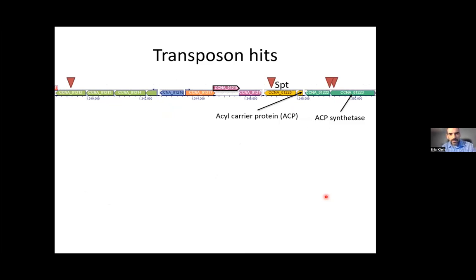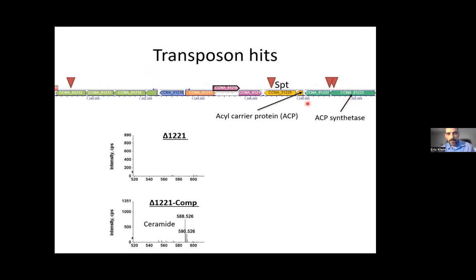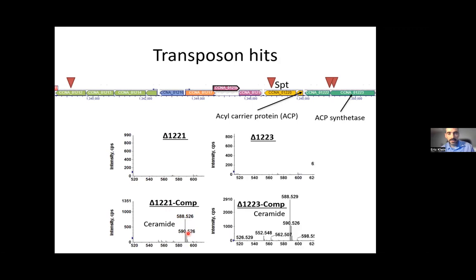When we did the screen we got a number of transposon hits, several of which were in the SPT gene - which makes perfect sense and confirms the validity of the general approach. We also got hits in nearby genes. As Dom pointed out, in Sphingomonas immediately next to the SPT is an acyl carrier protein, and Caulobacter is the same - there's an ACP and a couple genes down an ACP synthetase. When you knock out the ACP you completely lose ceramides, and you can complement it back and regain ceramide synthesis. Similarly, knocking out the synthetase loses ceramides and complementing it restores them.